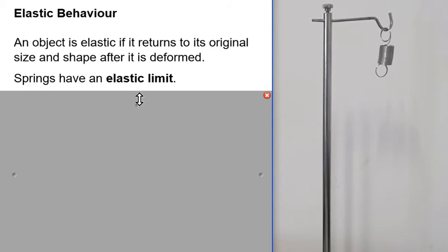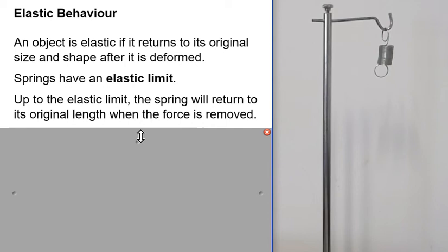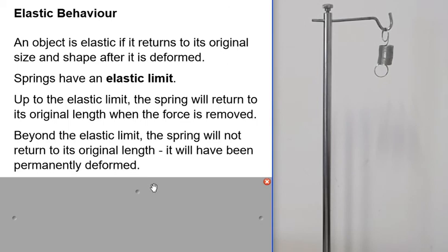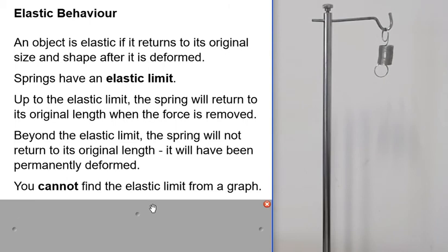However, springs have an elastic limit. You can't keep putting more and more weights on and expect the spring to always return to its original size and shape. Up to the elastic limit, the spring will return to its original length when the force is removed. Beyond the elastic limit, the spring will not return to its original length — it will have been permanently deformed.